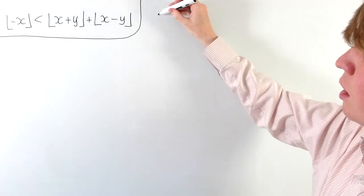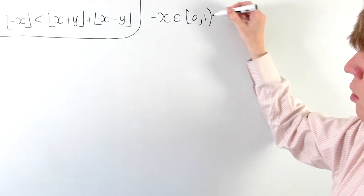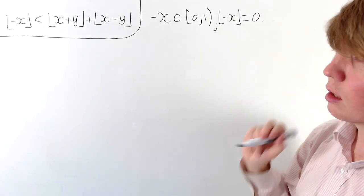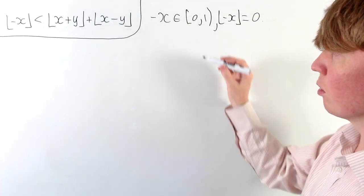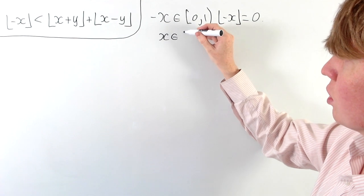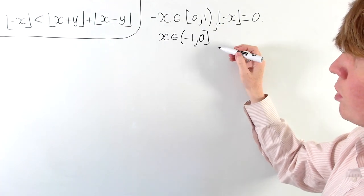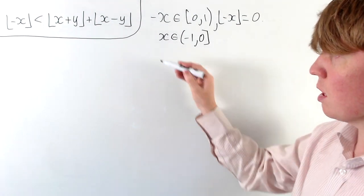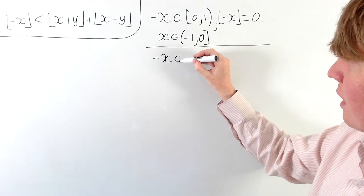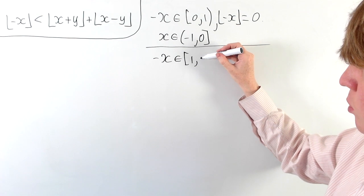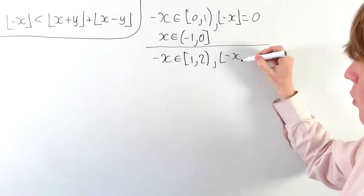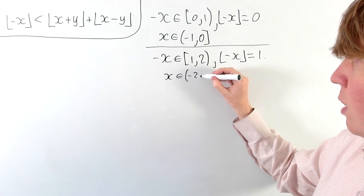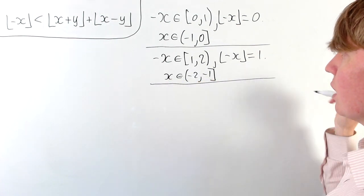Starting with the floor function of negative x: if negative x is between 0 and 1 — including 0 but not including 1 — then the floor function of negative x is equal to 0 by definition. This means x has to be between negative 1 (not included) and 0 (included). For the floor function of negative x to equal 1, we need negative x between 1 and 2, so x is between negative 2 and negative 1, including negative 1 but not negative 2.